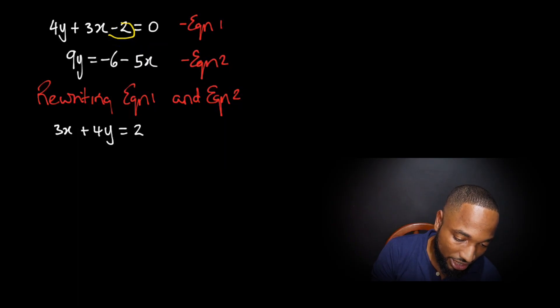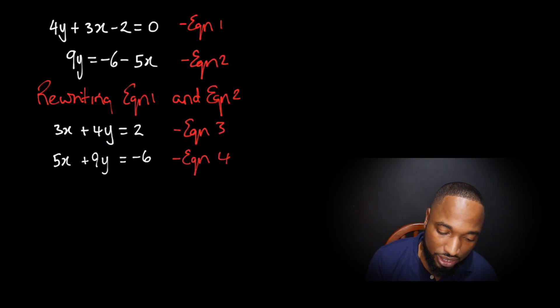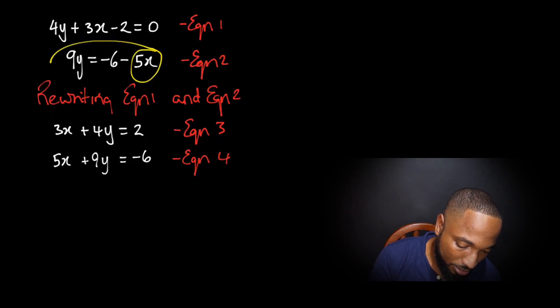Notice what happened here: I brought across the 2 because I want the numbers on this side so it turned positive, and I also rearranged the x and the y. I didn't really need to do that—I could have just kept all the y's here and all the x's there, but you know, just for familiarity. I also rearranged equation 2, brought across this x, and left the 6 there.